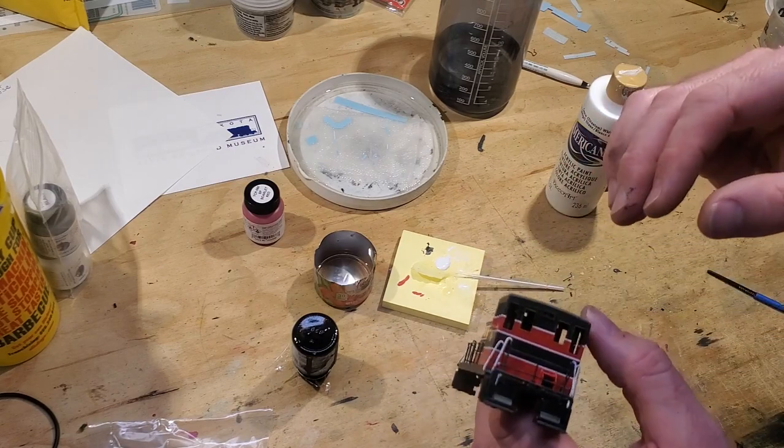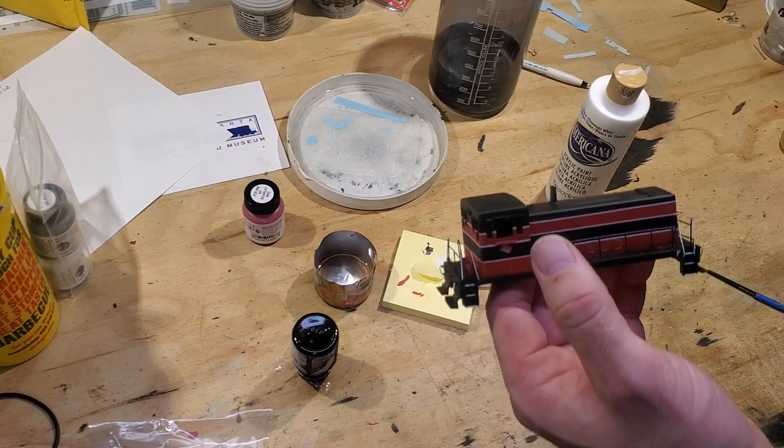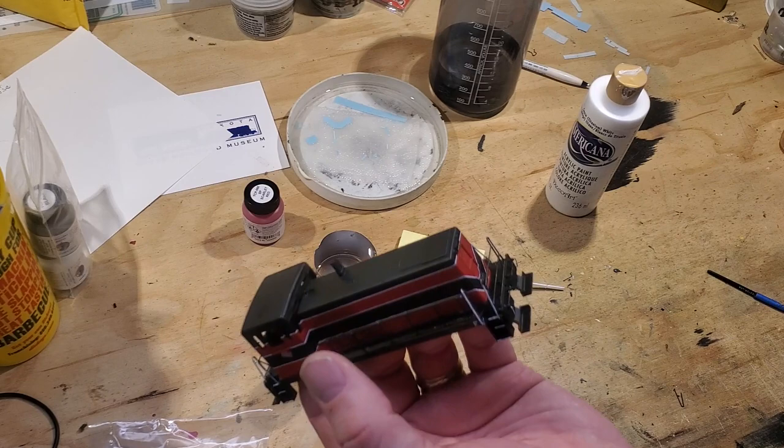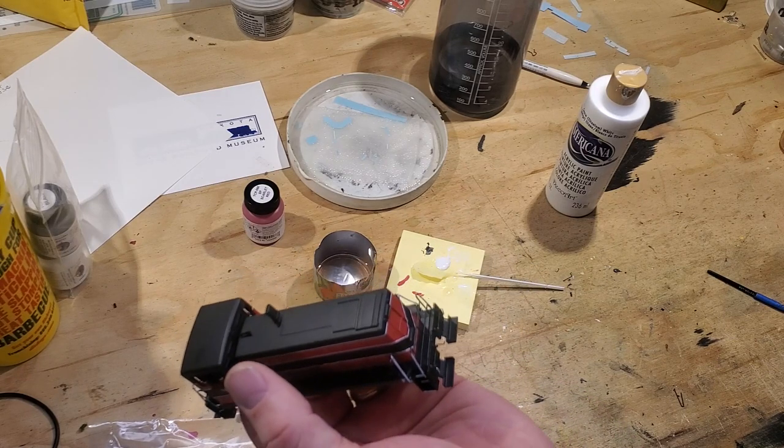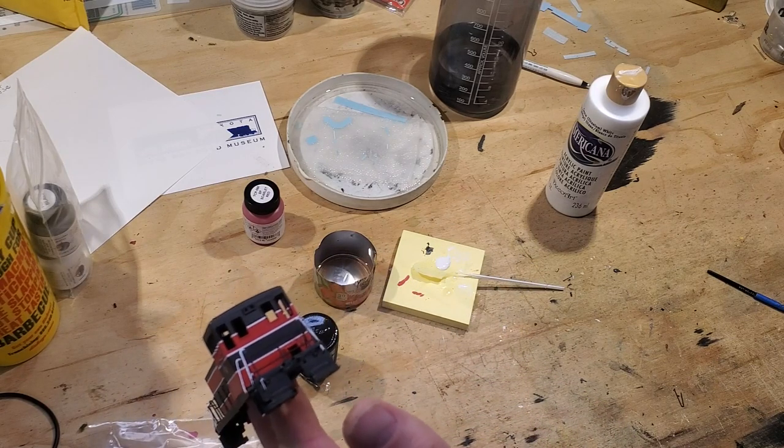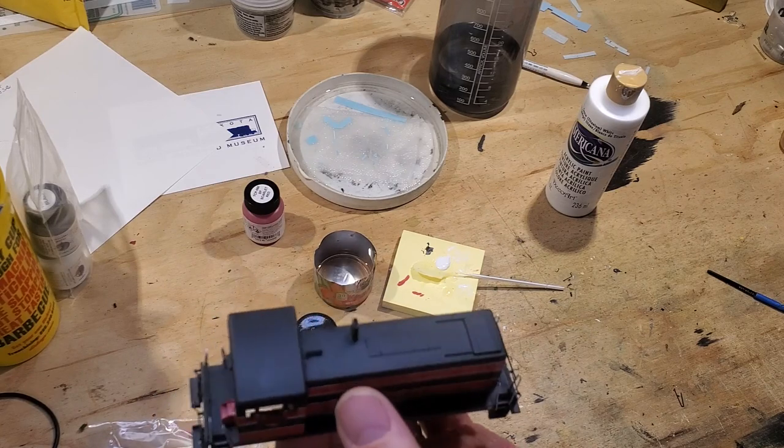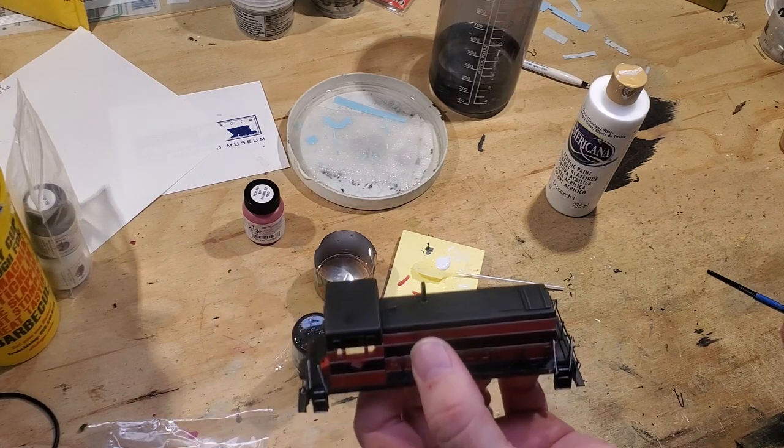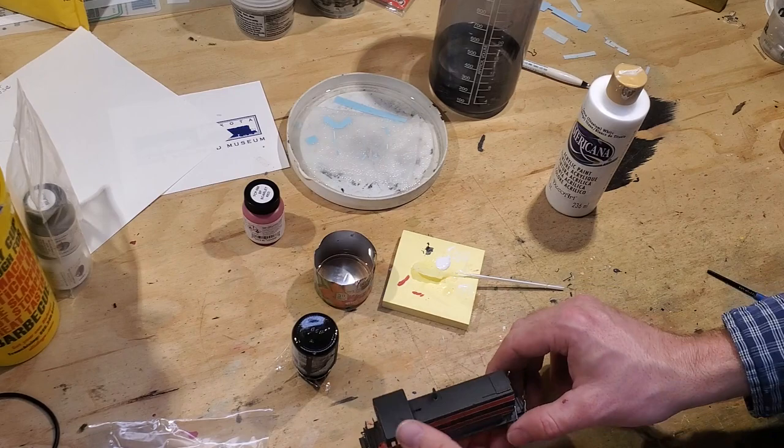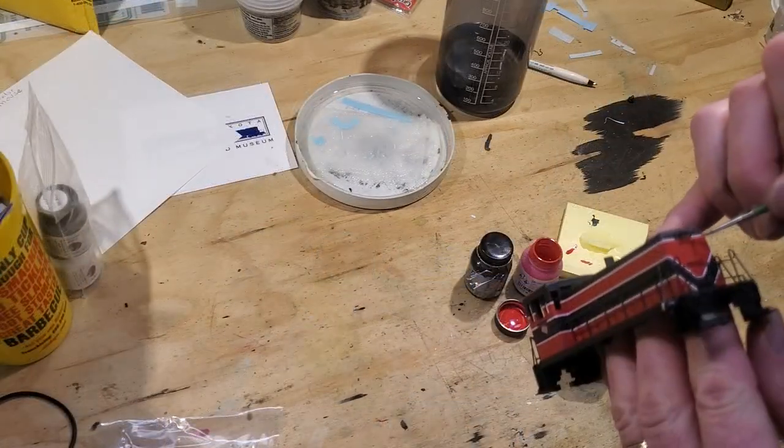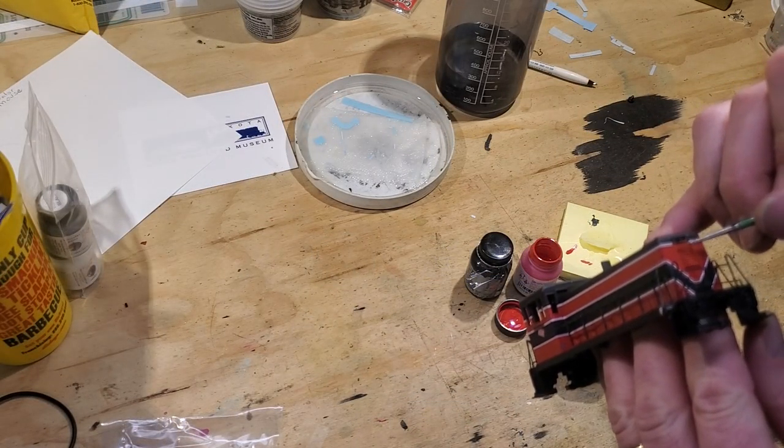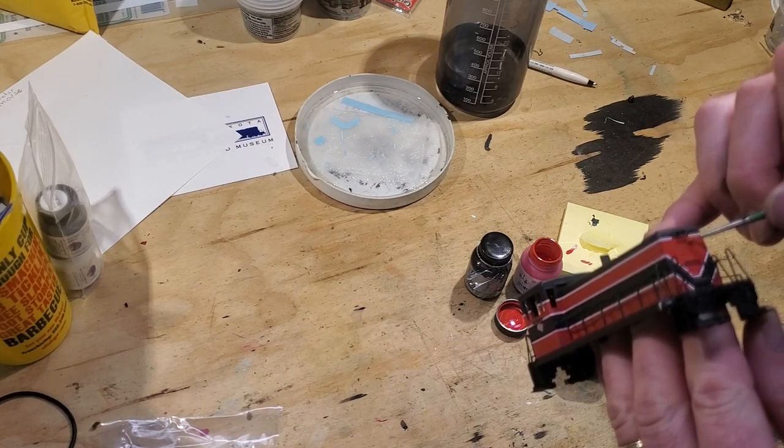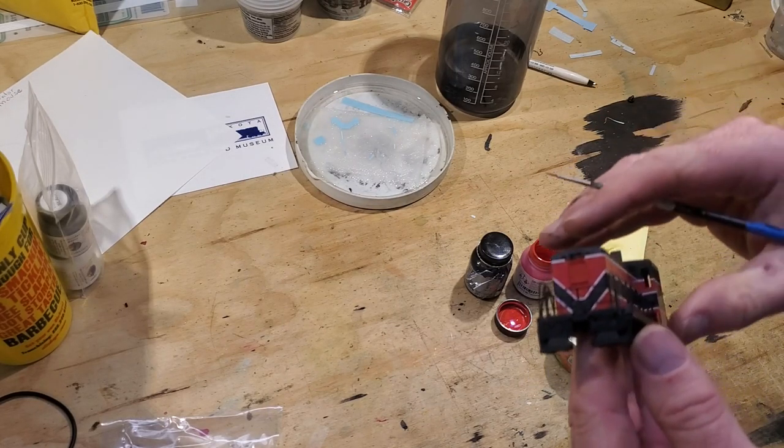One last thing to paint here is the headlight housings and the stack. I have to check my references on that, just to make sure we're doing the right thing. But I believe probably a silver on there and silver on the stack. But just getting rid of that obvious paint that was missing there, that red.